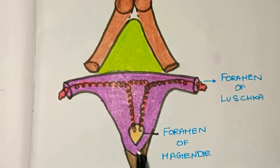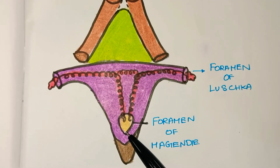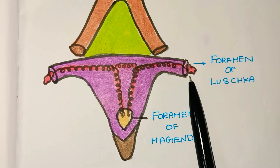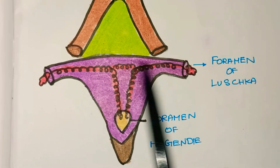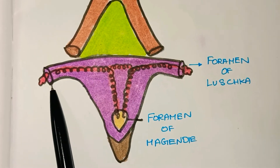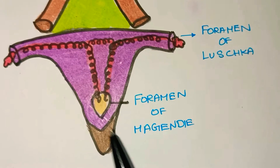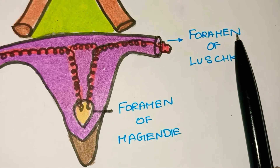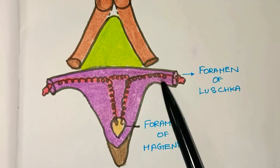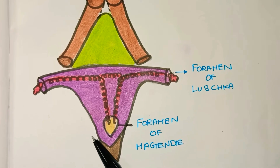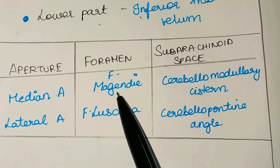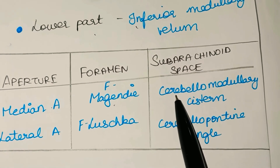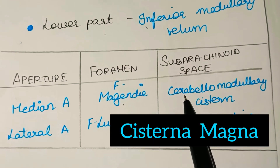The lower part of the roof is very important. In the midline it has a median aperture. Laterally, the ventricle extends into the lateral recess, which has a lateral aperture. The median aperture is called the foramen of Magendie, and the lateral aperture is called the foramen of Luschka.